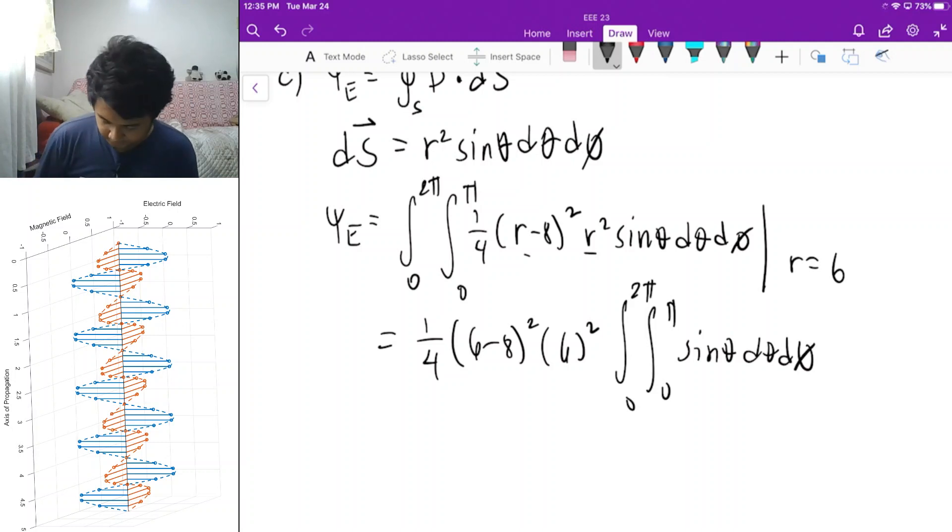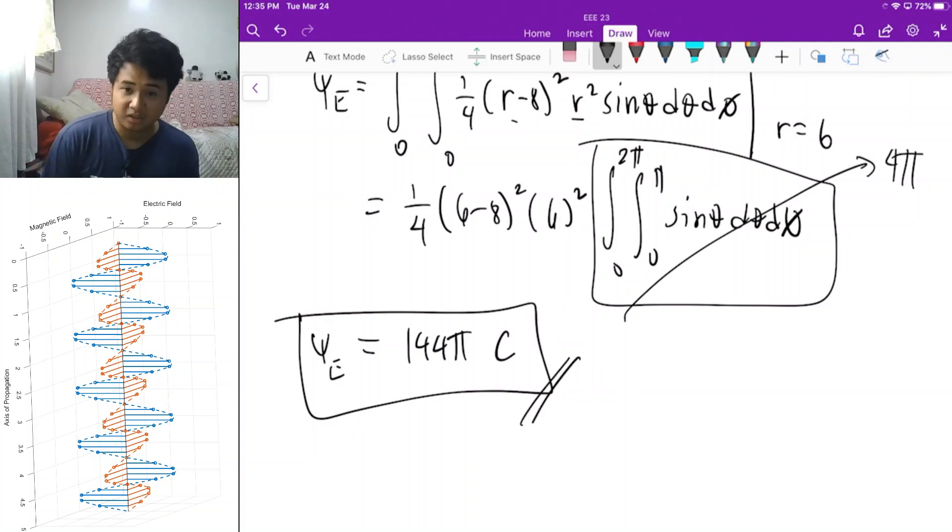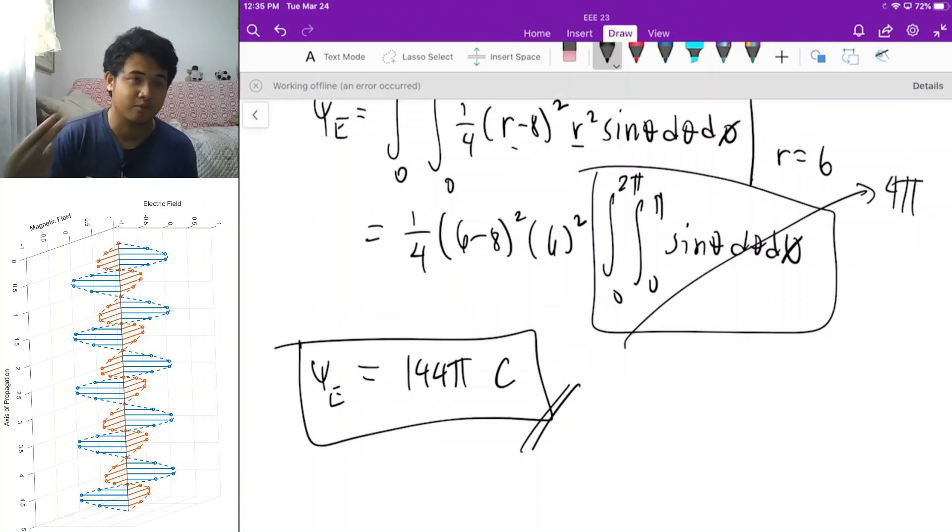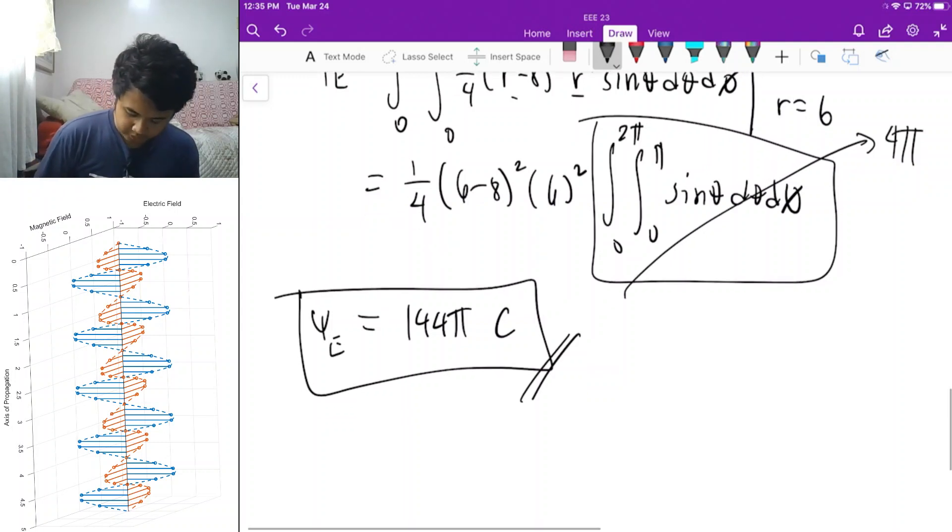A rule of thumb, if you have this integral here, it already simplifies to 4 pi. Once you got that, you will get psi e equal to 144 pi coulombs. Just a note, a lot of you made this mistake. The unit for electric flux is coulombs. What you indicated was Weber, which is a unit for magnetic flux, coincidentally also the unit for magnetic charge. Magnetic charge does not exist. It's just mathematical convention that we name a unit for magnetic charge, but Weber is the unit for the magnetic flux.